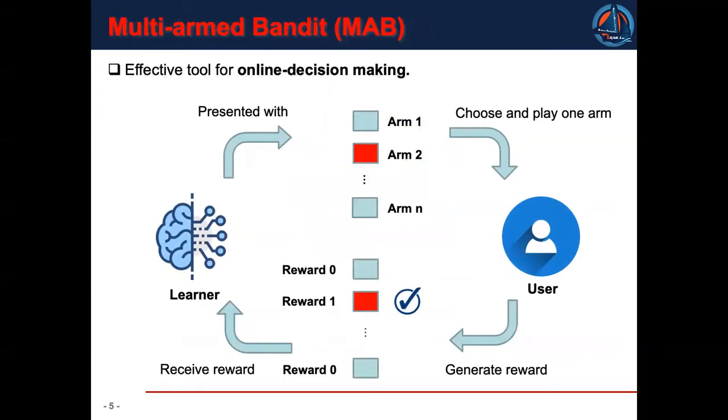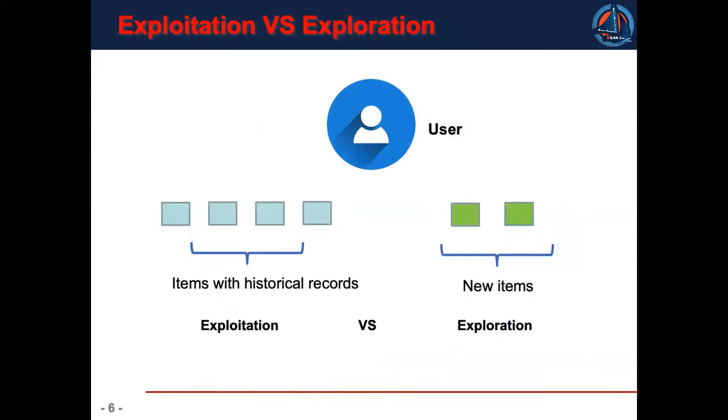To solve these challenges, Multi-Armed Bandits becomes a possible solution, which is an effective tool for online decision-making. Multi-Armed Bandits can naturally formulate the recommendation scenario where each arm represents an item and the reward quantifies the feedback of the users. The dilemma of exploitation and exploration usually exists in the recommendation scenario. For example, we need to exploit items with historical data and explore new items to gain more information.